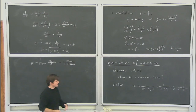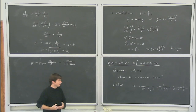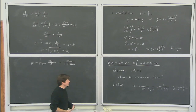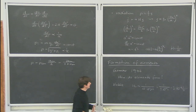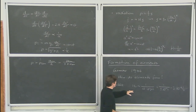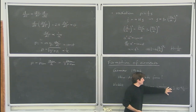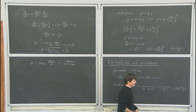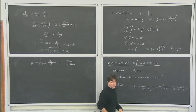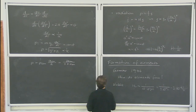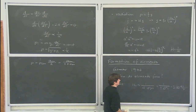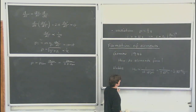We look at the formation of elements. This goes back to a paper by Gamow in 1946. The question was: how do elements form in an expanding universe? Or put differently, how long are the conditions in such a universe suitable for elements to form?